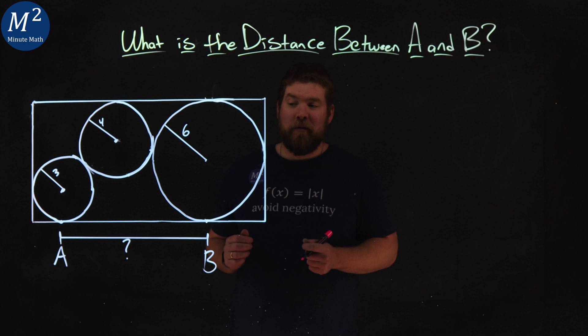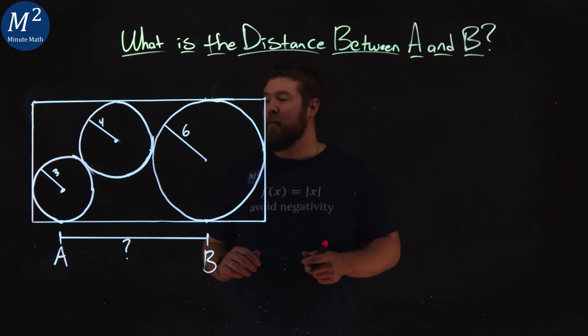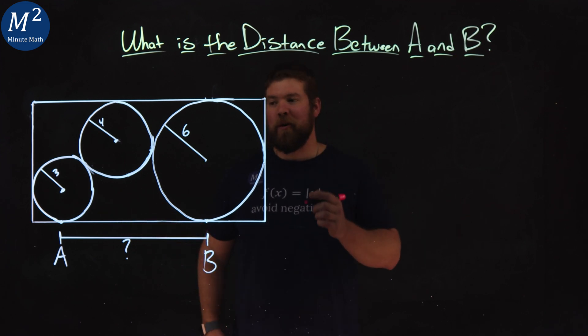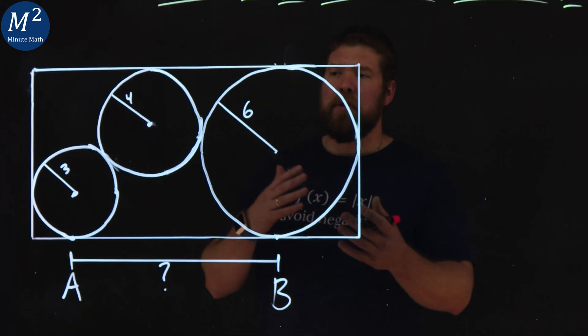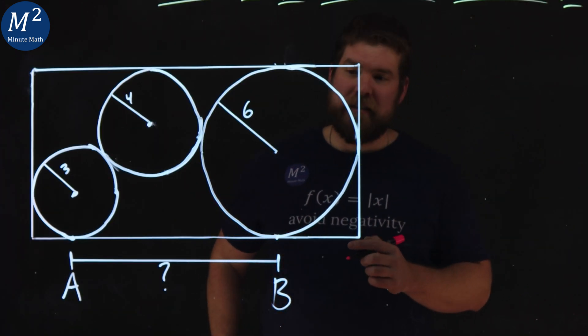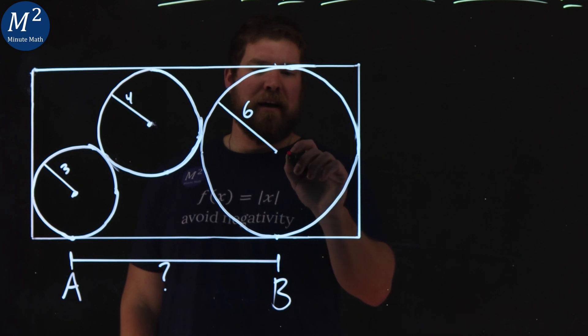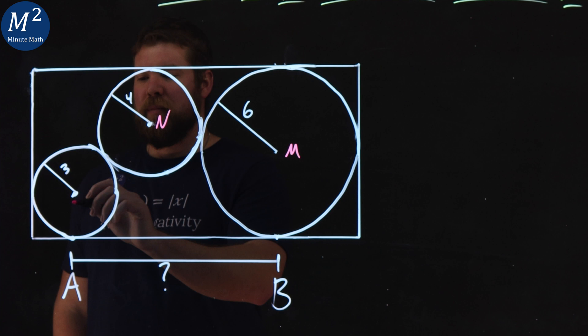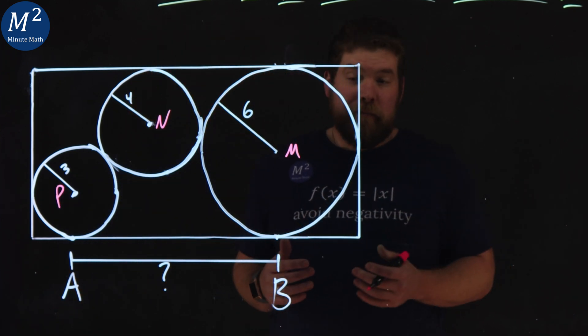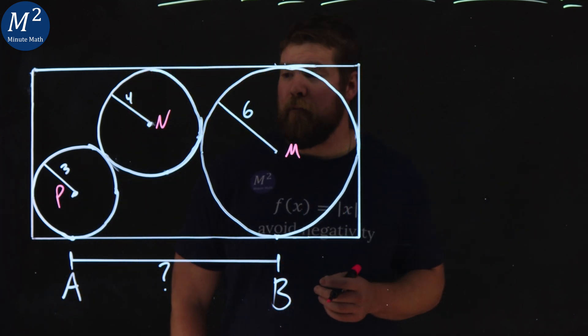So I'm going to give you a moment, pause this video if you want to see if you can solve it. If not, well, like always, we're going to dive on in. So when I'm approaching problems like this, let's get some labels here. Let's call these circles M, N, and let's call this one P. So give us a little labeling that becomes helpful.